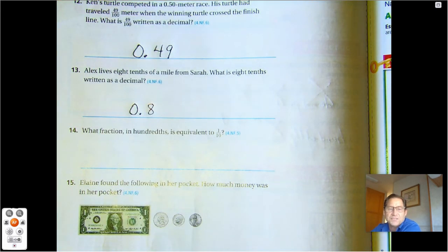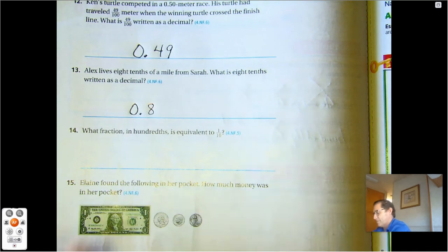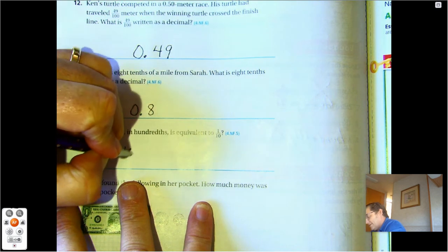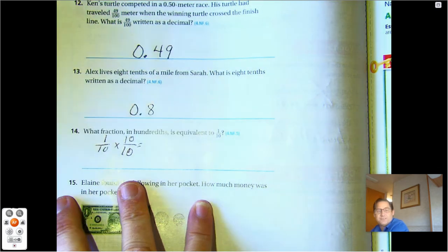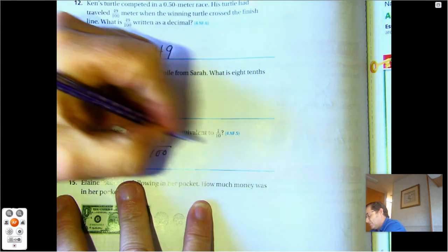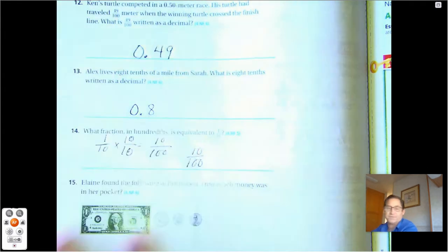What fraction in hundredths is equivalent to one tenth? So one tenth, multiply by ten to make the denominator hundredths. And ten times one is ten, so ten hundredths.